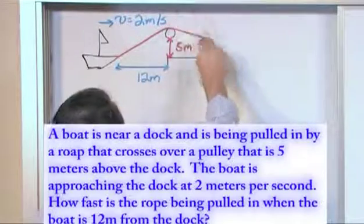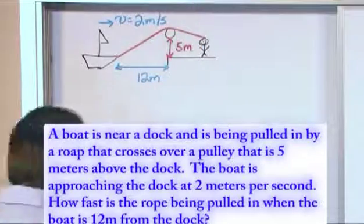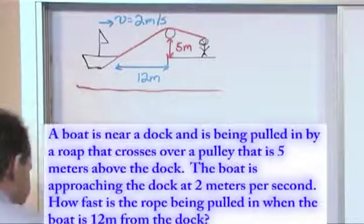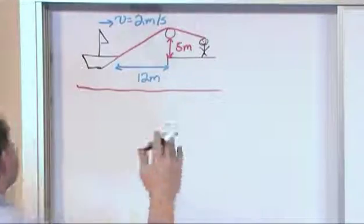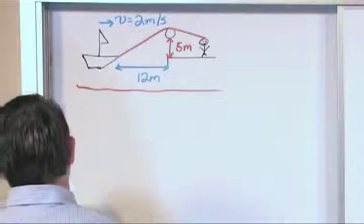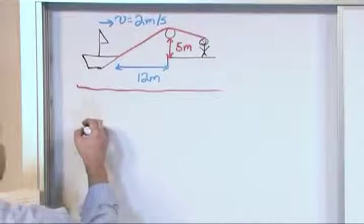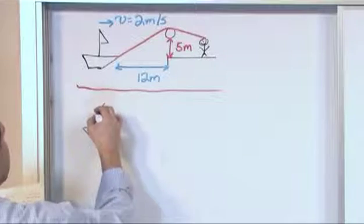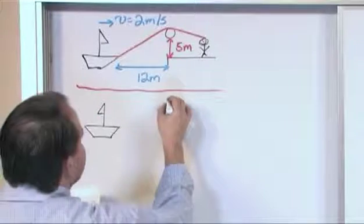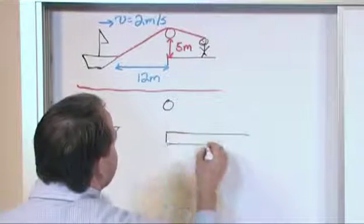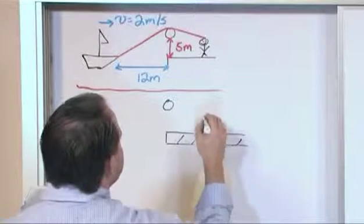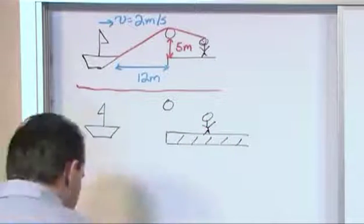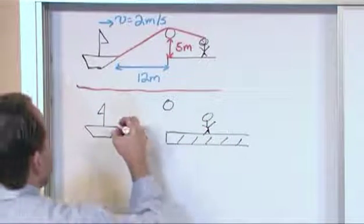What I'm interested in is how fast I have to pull on this rope. It's instructive — and I've told you this a few times already — to draw two different diagrams: one with just the numbers from the problem, and the other a little more analytic with some variables. We're going to have to write some variables so that we can take some derivatives. So here's the pulley again, here's the dock again, here's me on the dock again. Now let's draw our rope — same as before — so we come over here and down like this.